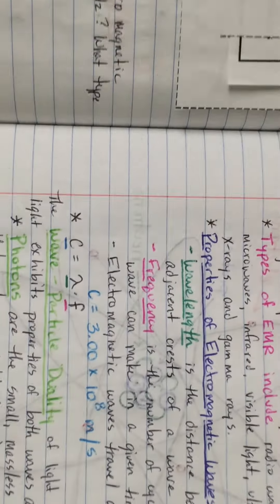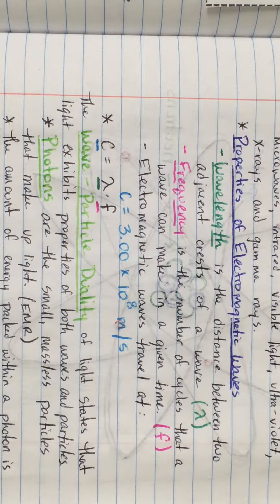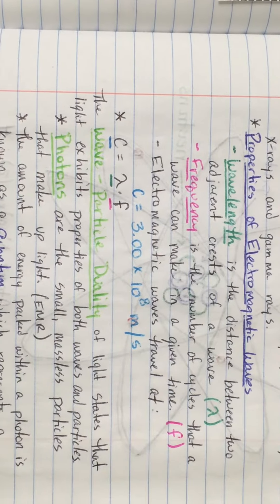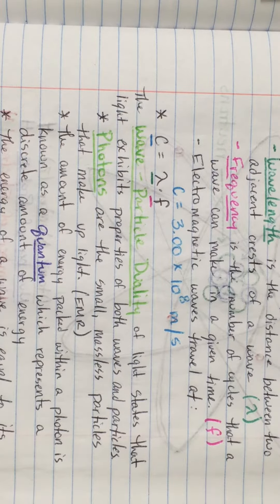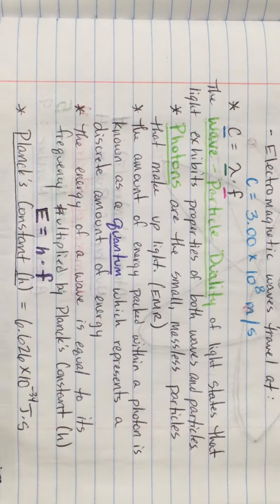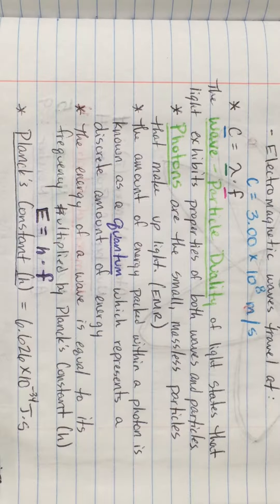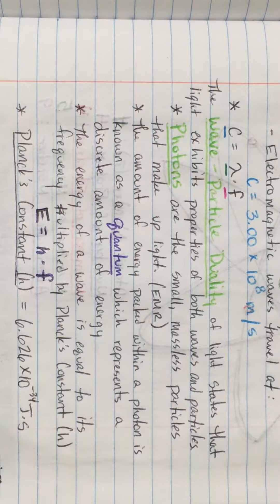On the right side of your notebook we're going to talk about the wave-particle duality of light. It turns out that in addition to behaving like a wave, light also exhibits the properties of a particle. Photons, which are the small massless particles that make up light, have both properties of a particle and properties of a wave. Each photon is packed with a certain amount of energy known as a quantum — a discrete, constant amount of energy. The energy of that quantum can be calculated by multiplying the frequency times Planck's constant, which is 6.626 times 10 to the negative 34th joules times seconds.